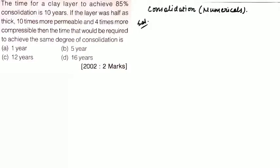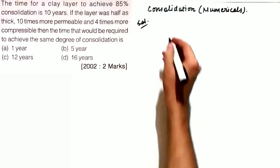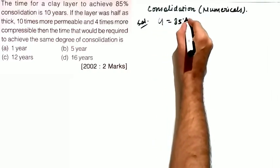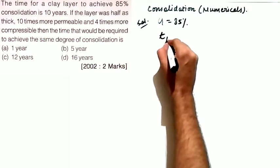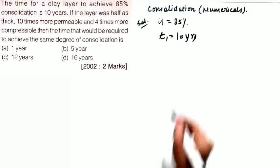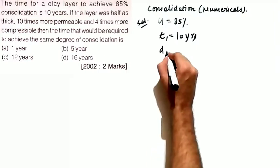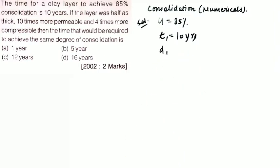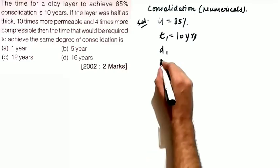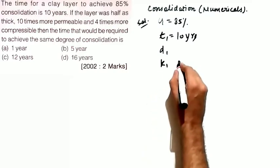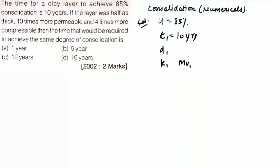Hello everyone, welcome to my YouTube channel. We are going to start with the numerics related to consolidation of soils. The first question says that the time for a clay layer to achieve 85% consolidation is 10 years. For U equals 85%, let us say t1 equals 10 years. We denote the thickness of this layer as d1, the permeability as k1, and the compressibility as mv1.